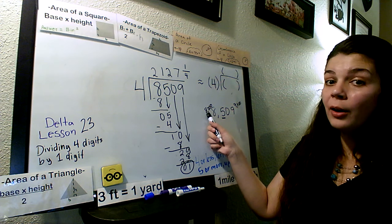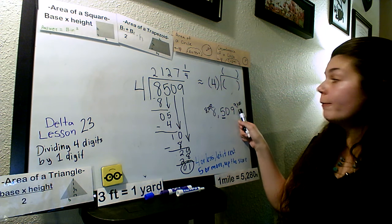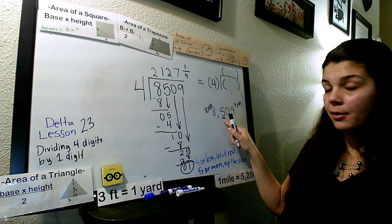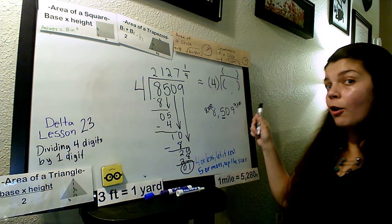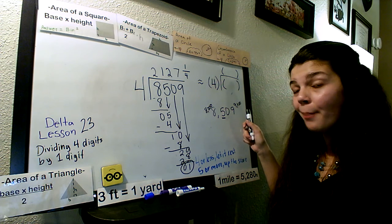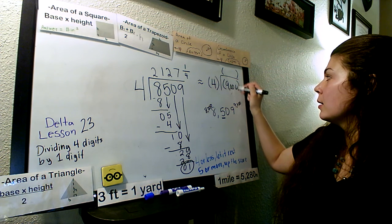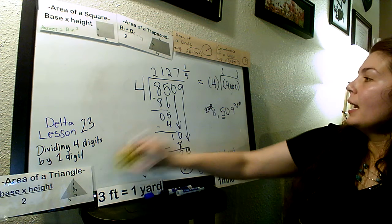Is it going to be 4 or less, let it rest, or 5 or more up the score. It's a 5. I'm going to go 5 or more up the score with 9,000.